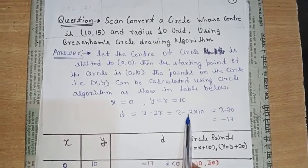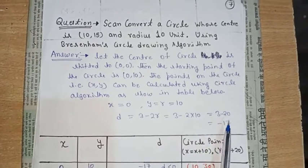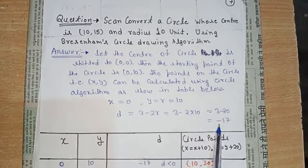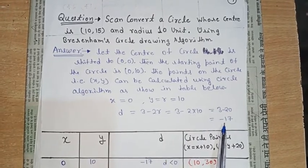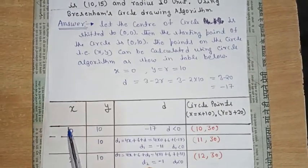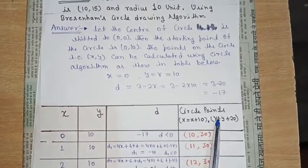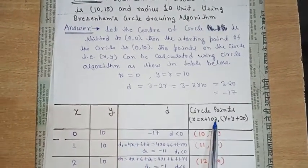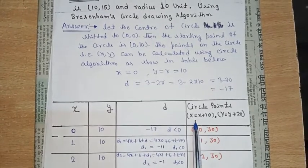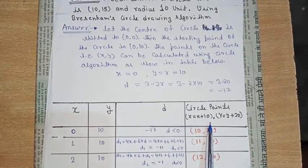So d = 3 minus 2 into 10 = 3 minus 20 = minus 17. Now we will draw a table with columns x, y, d, and circle points. Circle points are calculated as: Capital X = x + h, and Capital Y = y + k.